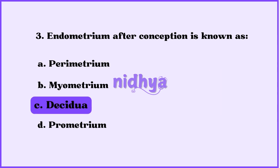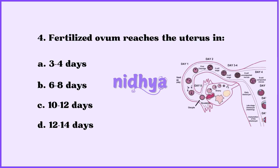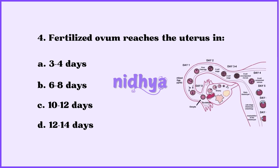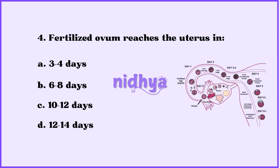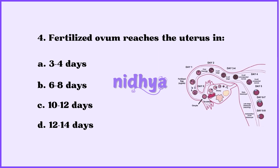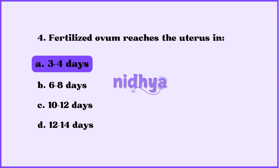Fourth question: Fertilized ovum reaches the uterus in — 3–4 days, 6–8 days, 10–12 days, or 12–14 days? The answer is 3–4 days.